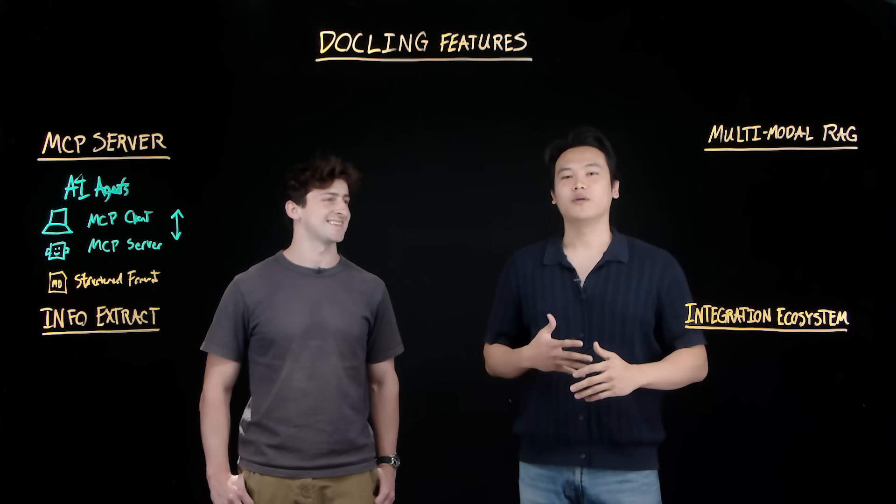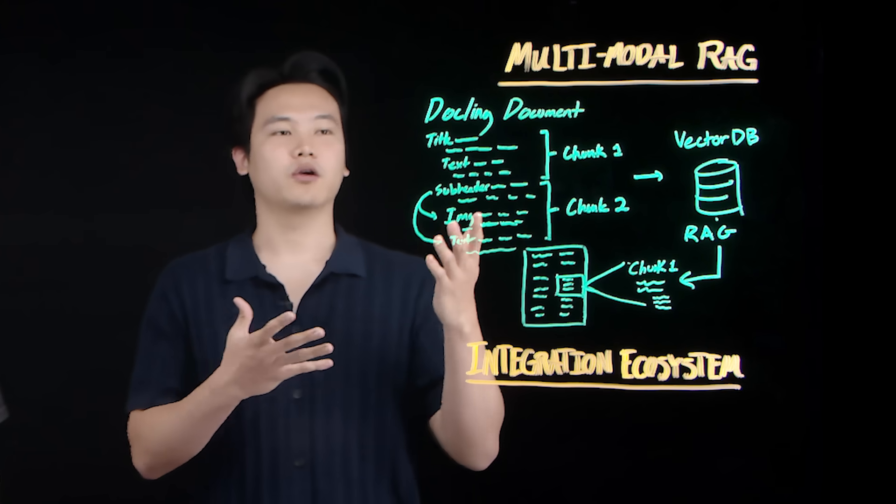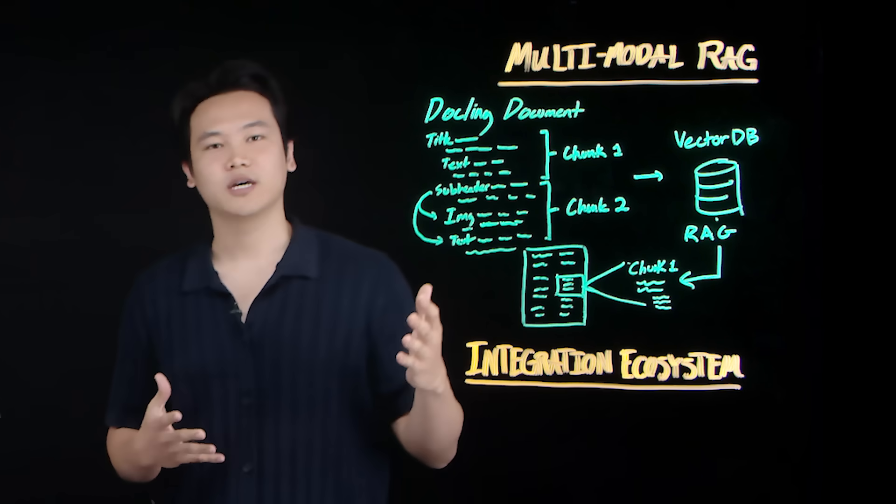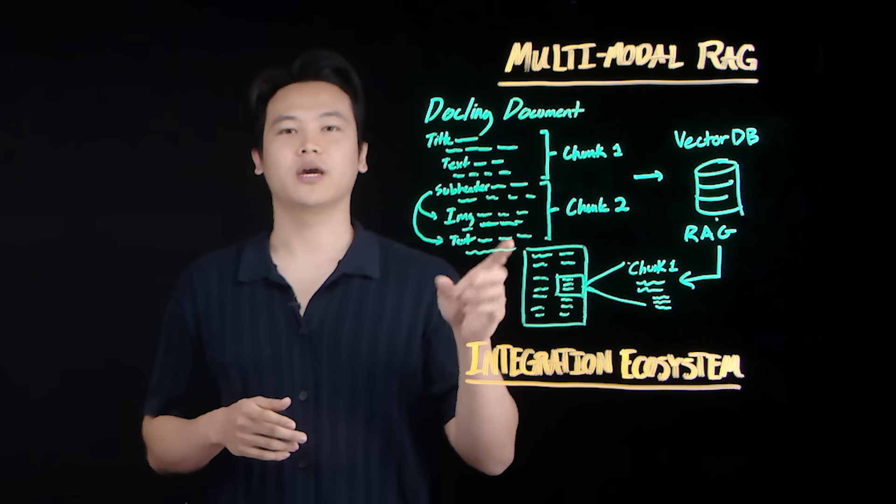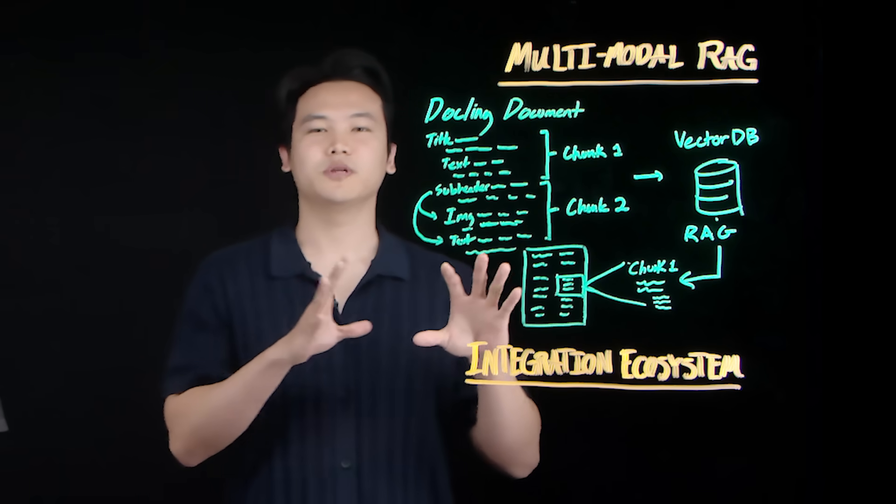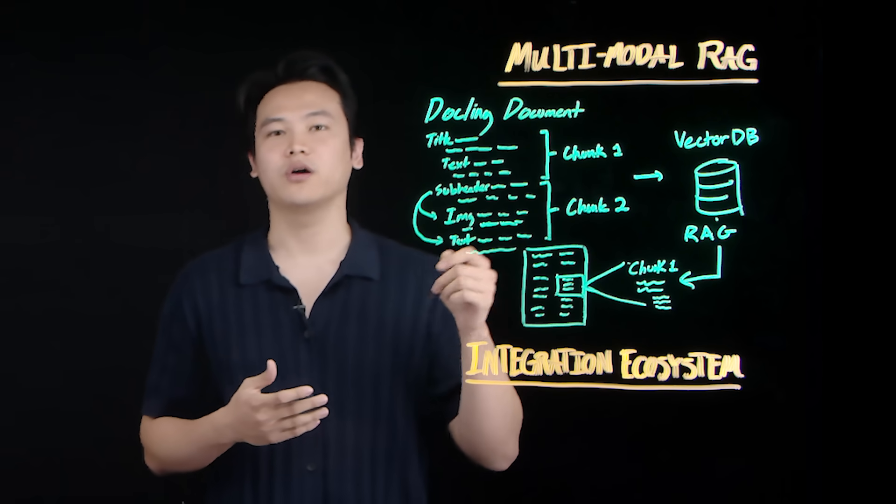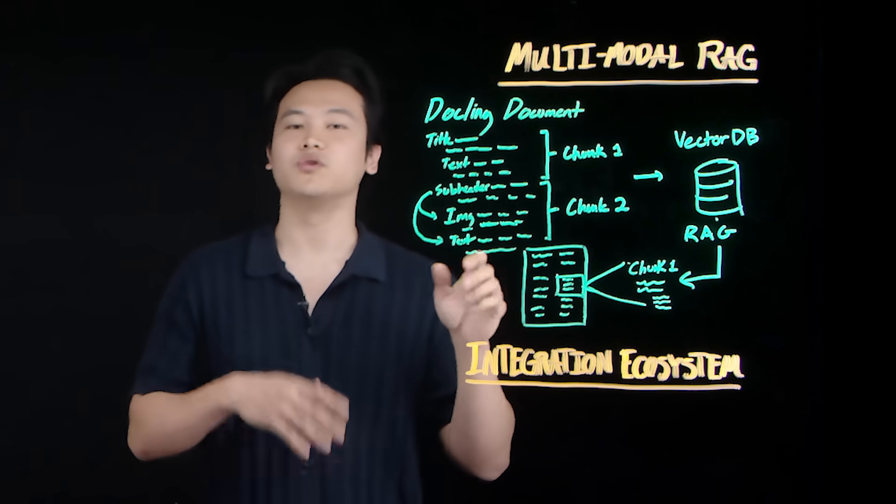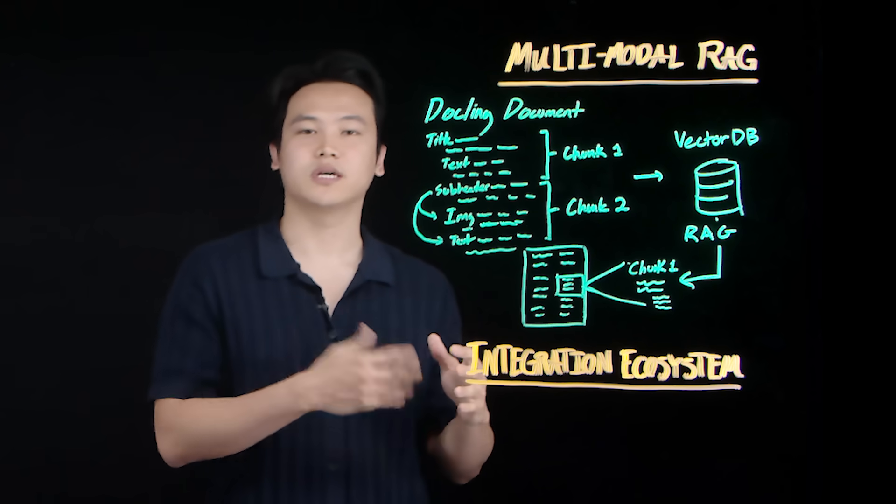One of the most common downstream uses after conversion is RAG. Because Dockling is outputting a rich hierarchical Dockling document with element types, headings, and per element metadata, you get structure aware chunking out of the box. That means splitting by sections, tables, and captions, and automatically carrying parent context like titles and headers, producing more cohesive chunks and better retrieval signals than naive, fixed-sized splits.